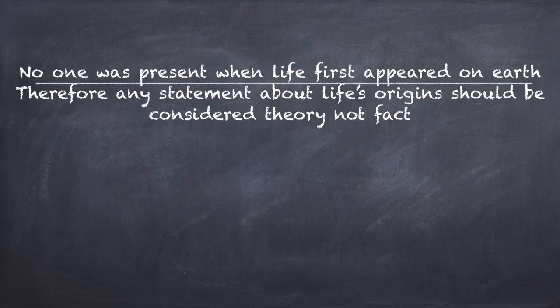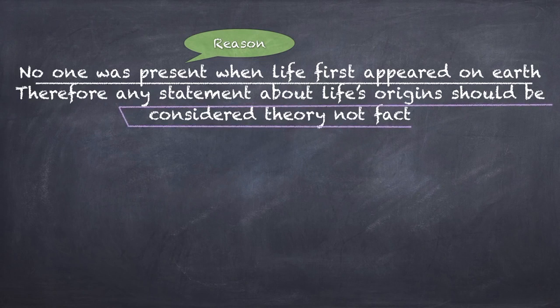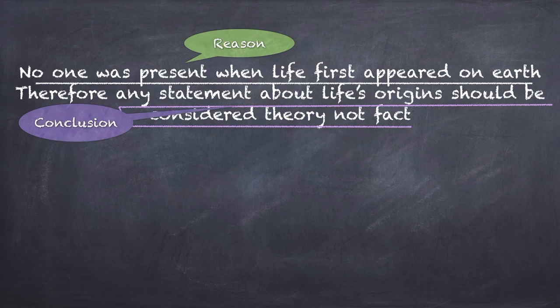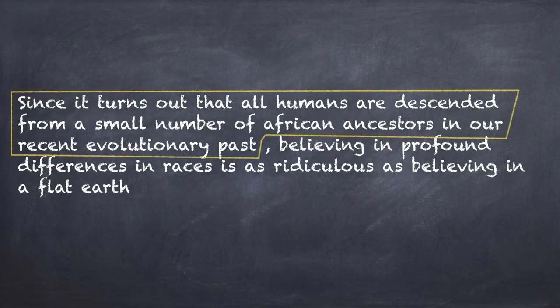In the examples, our only purpose is to divide the argument into a conclusion and reason. 'No one was present when life first appeared on earth' is the reason given for the conclusion that 'any statement about life's origin should be considered theory, not fact.' The author wants you to believe statements about the origin of life should be considered theory — and the reason given is that no one was present.